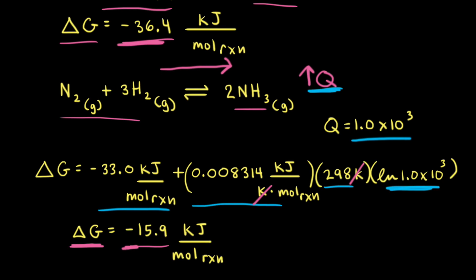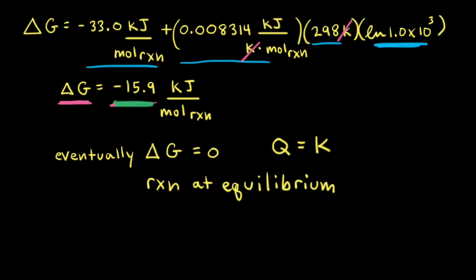Since delta G is still negative, the forward reaction is favored, so the reaction continues moving to the right to increase products and decrease reactants — and Q will continue to increase. Notice what's happening to delta G: it was negative 36.4, then negative 15.9, and as Q keeps increasing, delta G keeps getting closer and closer to zero. Q will keep increasing until delta G equals zero and the reaction is at equilibrium. As long as Q is not equal to the equilibrium constant K, the reaction is not at equilibrium. Eventually Q will equal K, and if we plug that value into our equation, delta G will equal zero — and the reaction is at equilibrium.